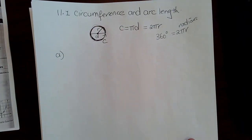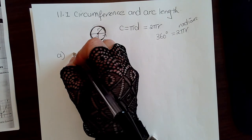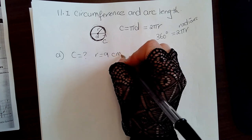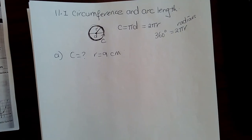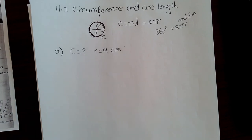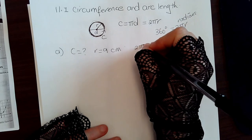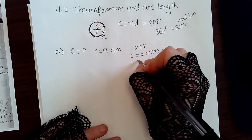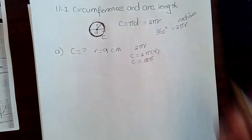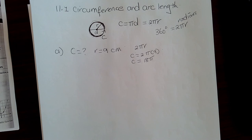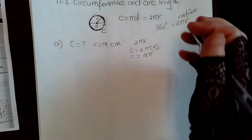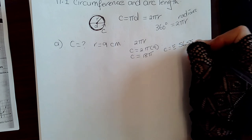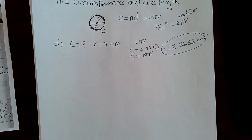Let's start with a quick example. We're going to find the circumference of a circle with a radius of 9 centimeters. Since we have the radius, we'll use C = 2πr. So the circumference equals 2 × π × 9, which is 18π. If you put that in your calculator, 18 times pi is approximately 56.55 centimeters.